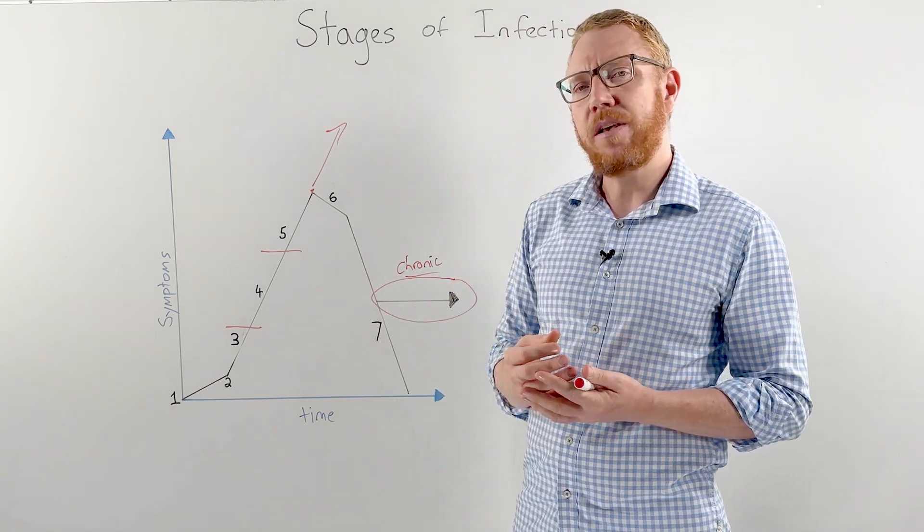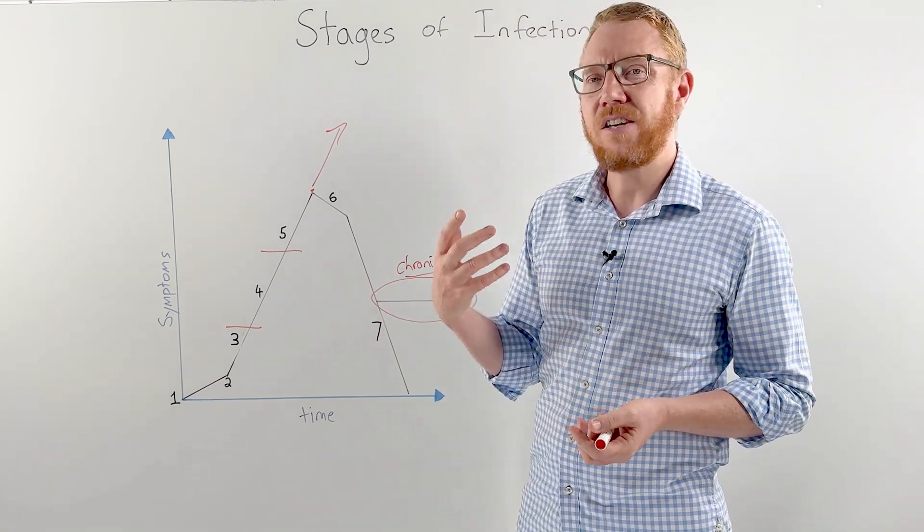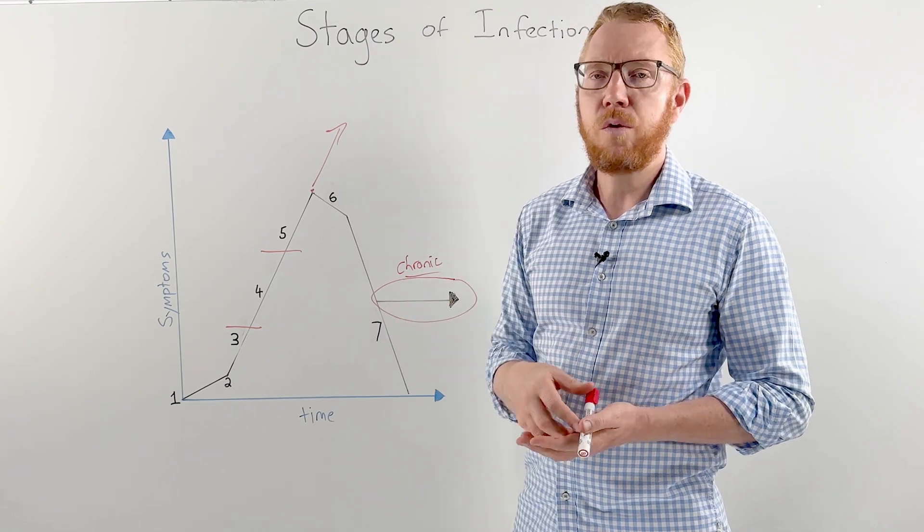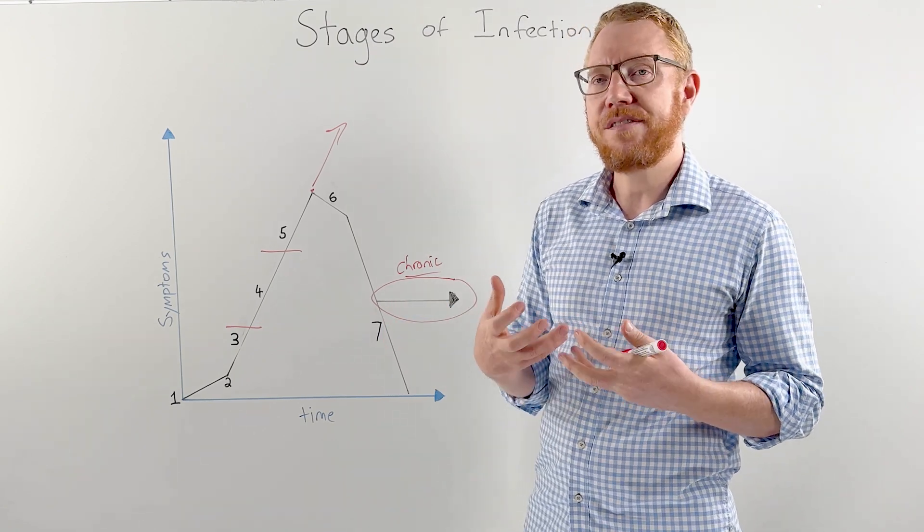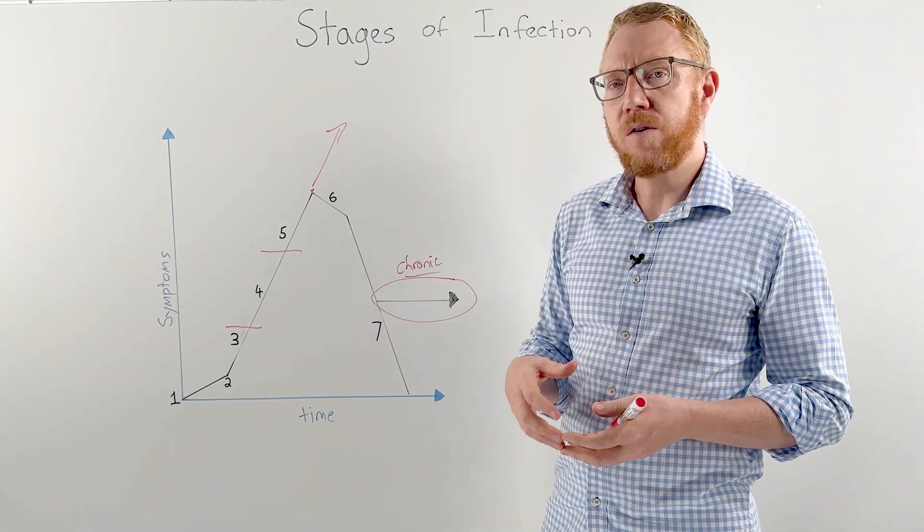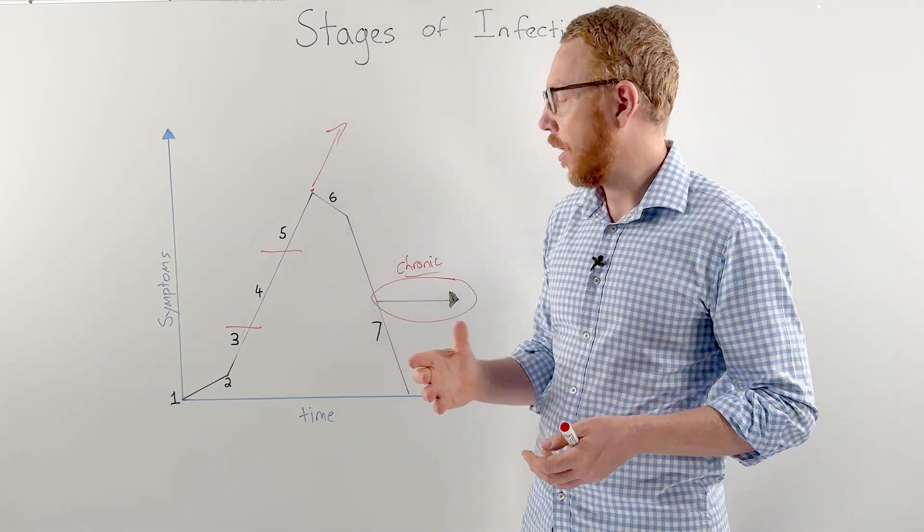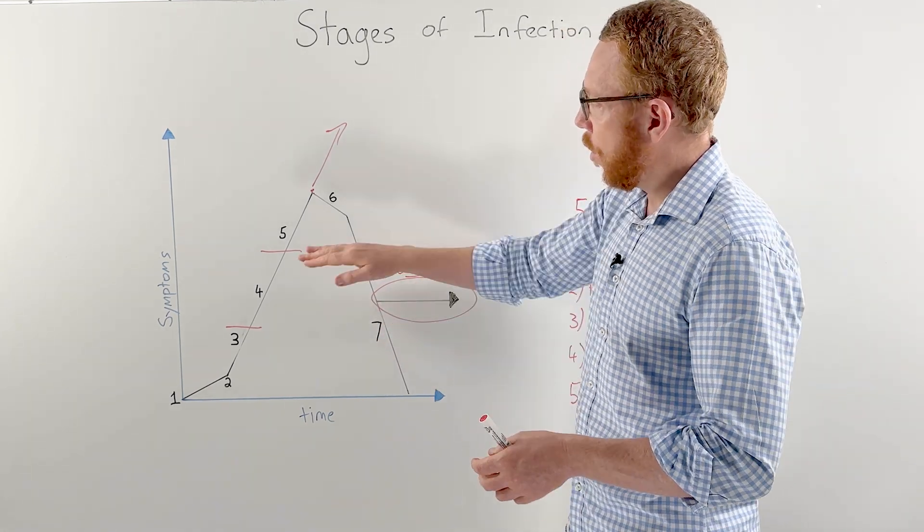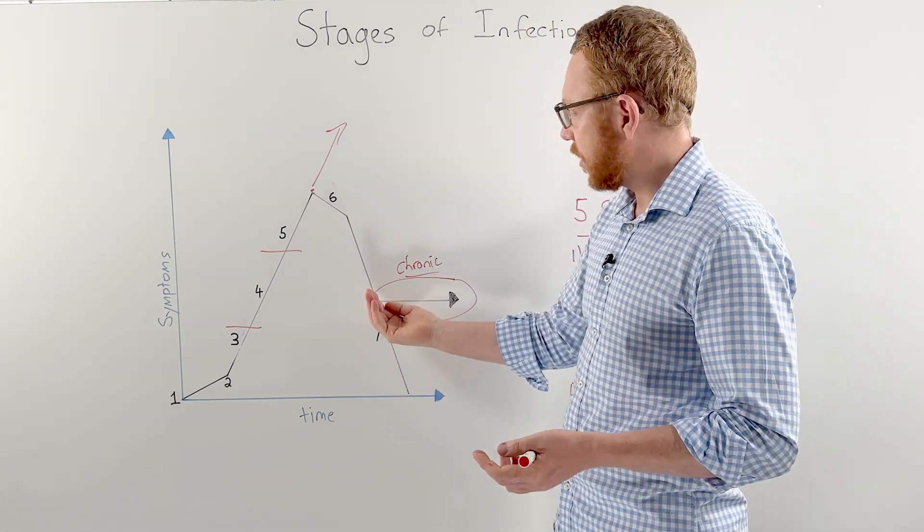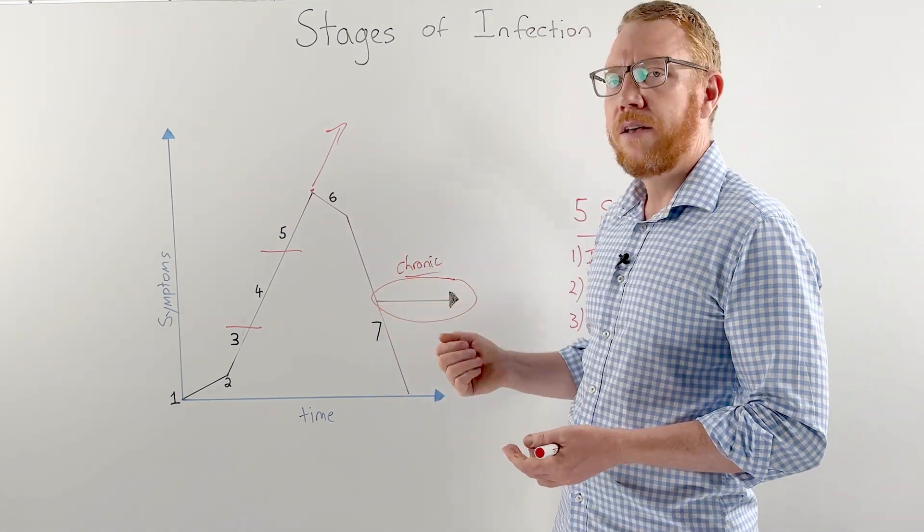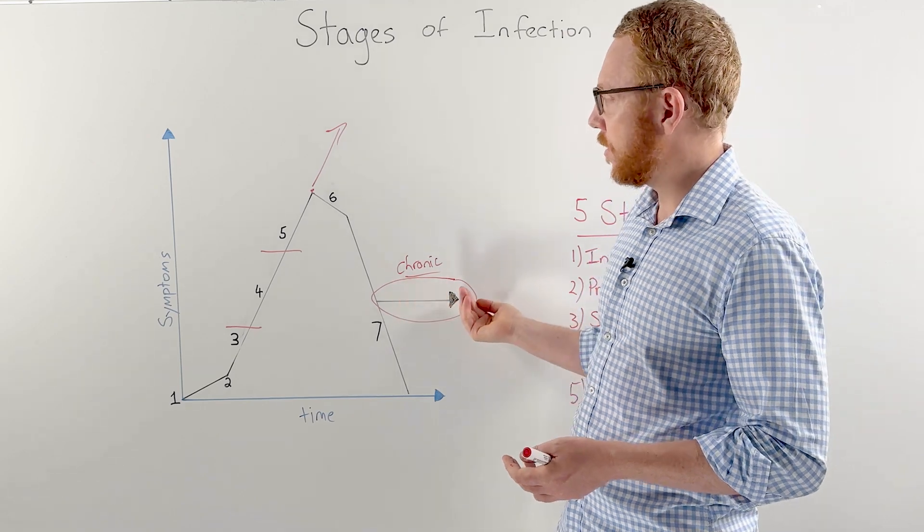A final interesting example is some viruses can actually lead to cancer. So an example there would be human papillomavirus, which can infect the epithelium of the cervix, which can then lead to dysplasia, and then it could lead to cervical cancer. That's again just highlighting, although we may process the virus and get rid of it, we actually may develop chronic symptoms or chronic disease as a result.